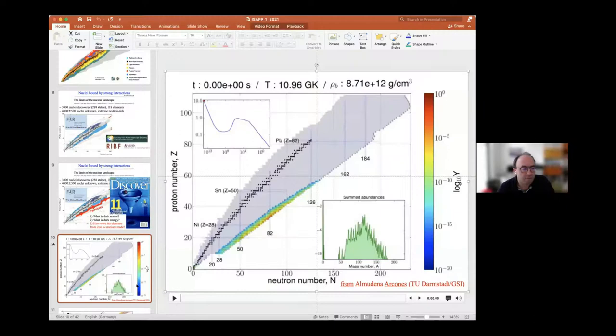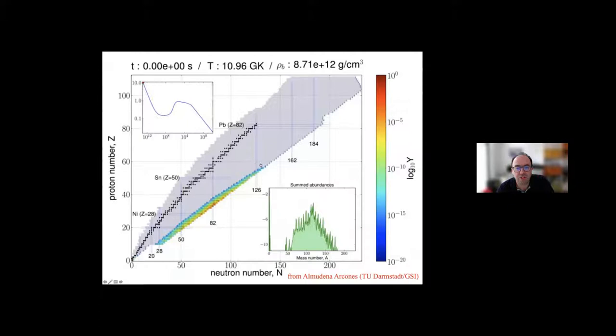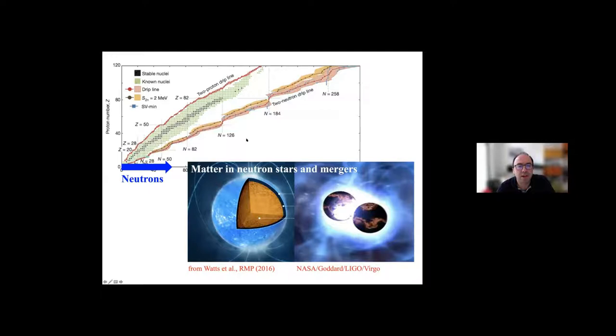You basically synthesize all the heavy elements along this r-process path. These freshly synthesized neutron-rich nuclei beta decay back and form the abundances observed in the solar system. The synthesis path goes along here; you need very neutron-rich environments. That happens either in phenomena occurring in neutron stars or in neutron star mergers. From this decay of freshly synthesized neutron-rich nuclei, one can get energy gain and this can be observed.